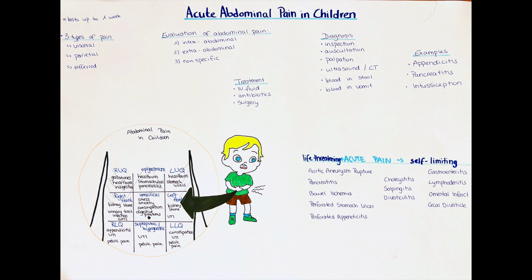When talking about abdominal pain we differentiate between three types of pain: visceral, parietal, and referred pain. Visceral pain is due to stretching of the fibers innervating the walls of a hollow or solid organ. It is generally poorly localized, so a patient will point at the pain with their whole hand rather than a single finger. Visceral pain can also be due to early ischemia or inflammation of an organ.